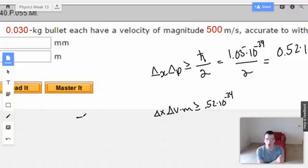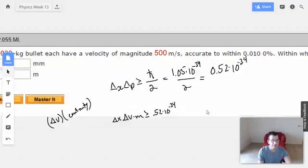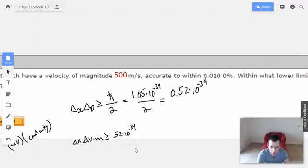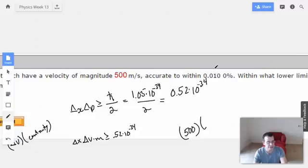We know that we're certain of the velocity to within the certainty. To turn a percentage into a fraction, we have 0.010 percent, we have to move this over 2. So we have 0.0001, which is 1 times 10 to the negative 4th. So 500 times 10 to the negative 4th.